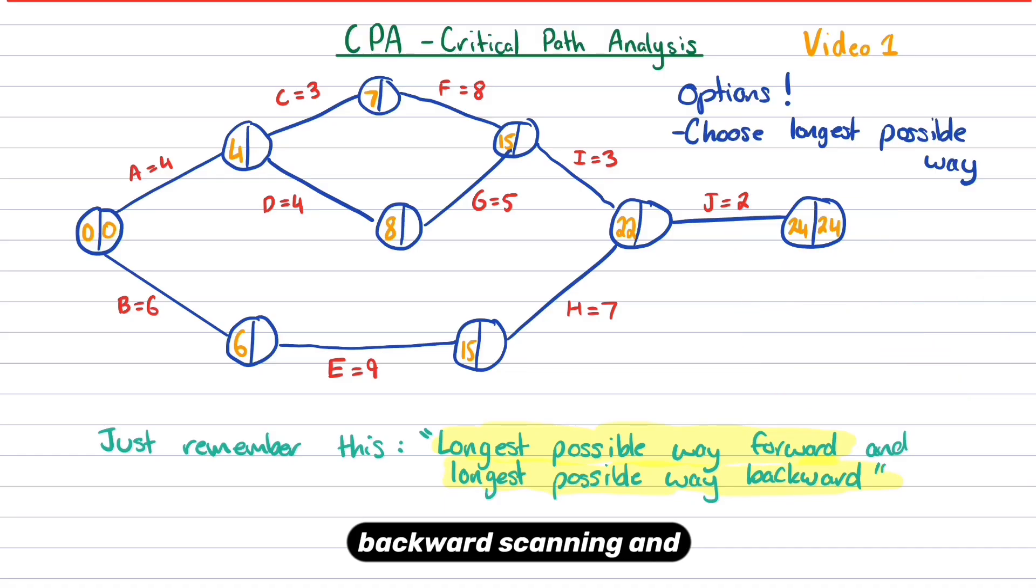Now we're going to begin backward scanning. And backward scanning, we're going the longest possible way backwards. So obviously there's one option for the first part. It's going to be 22. And when we go downward, there's only one option because there's only one path going that way. So we're going to do 22 take seven, which is 15. And then same, if we keep going along, we've just got one option. So 15 take nine is six.